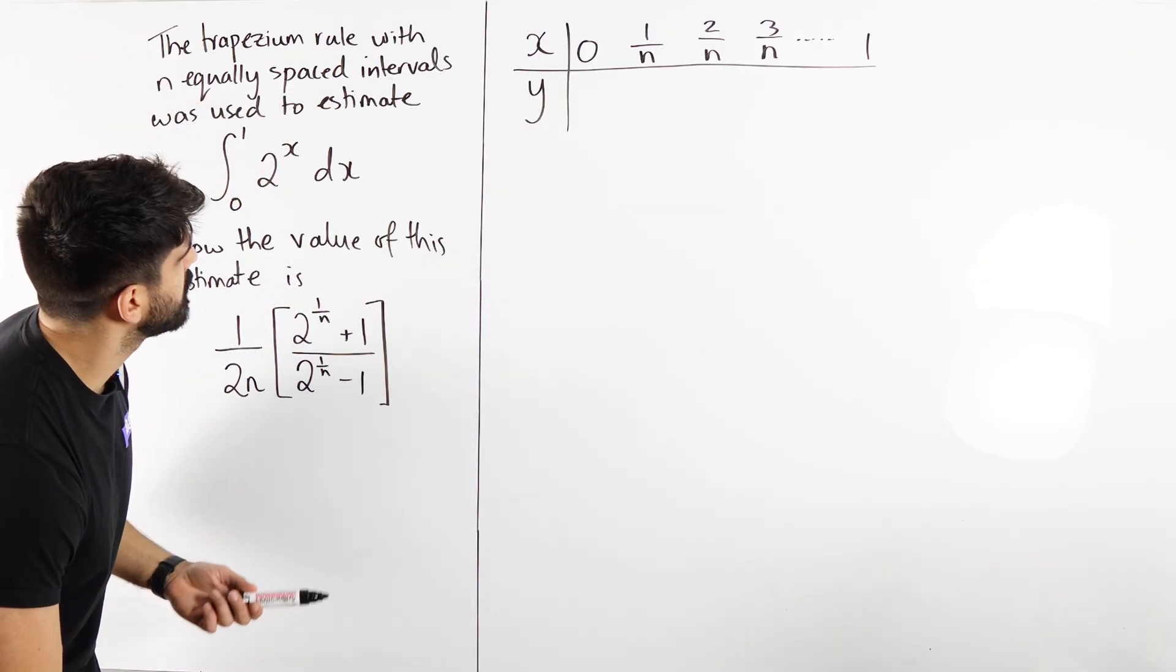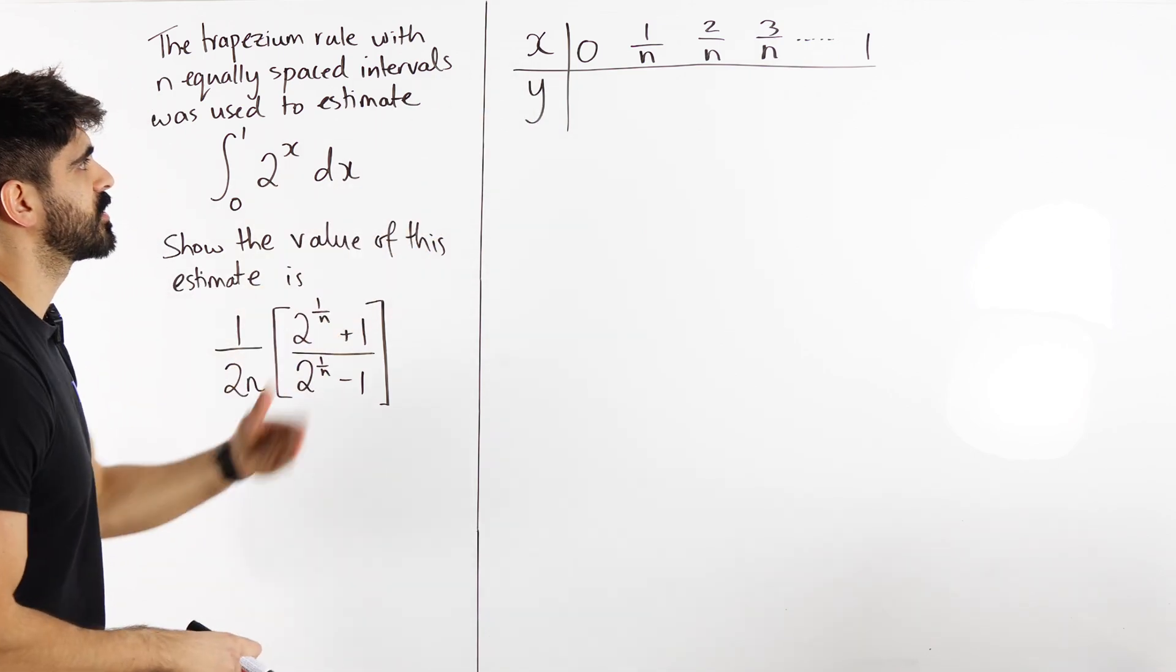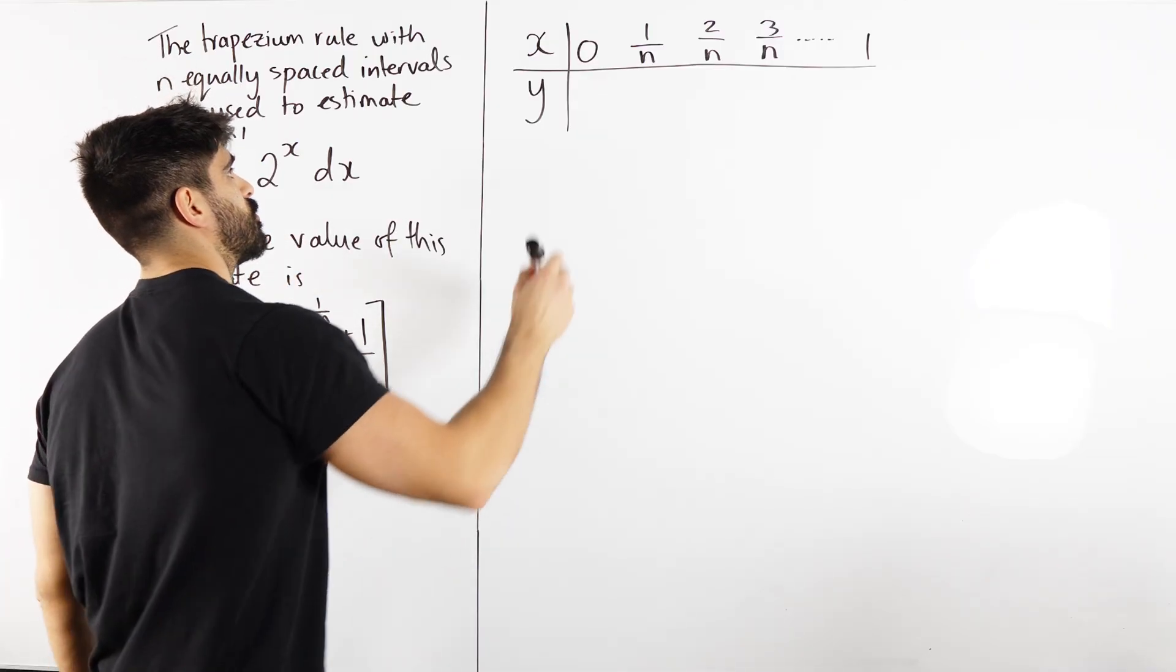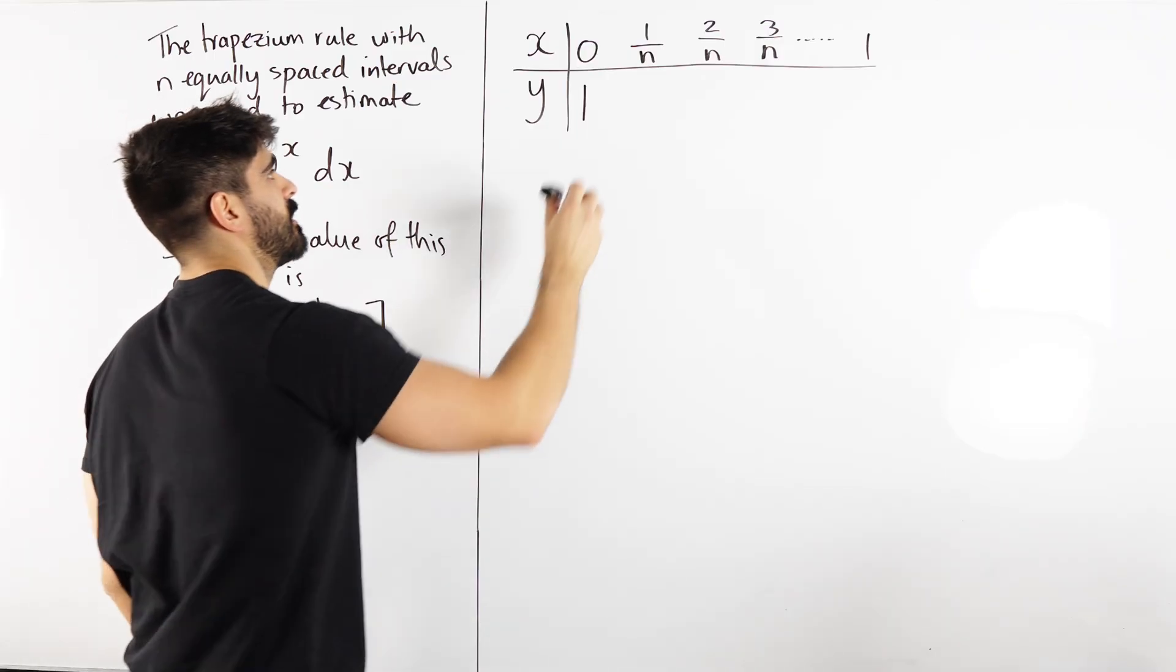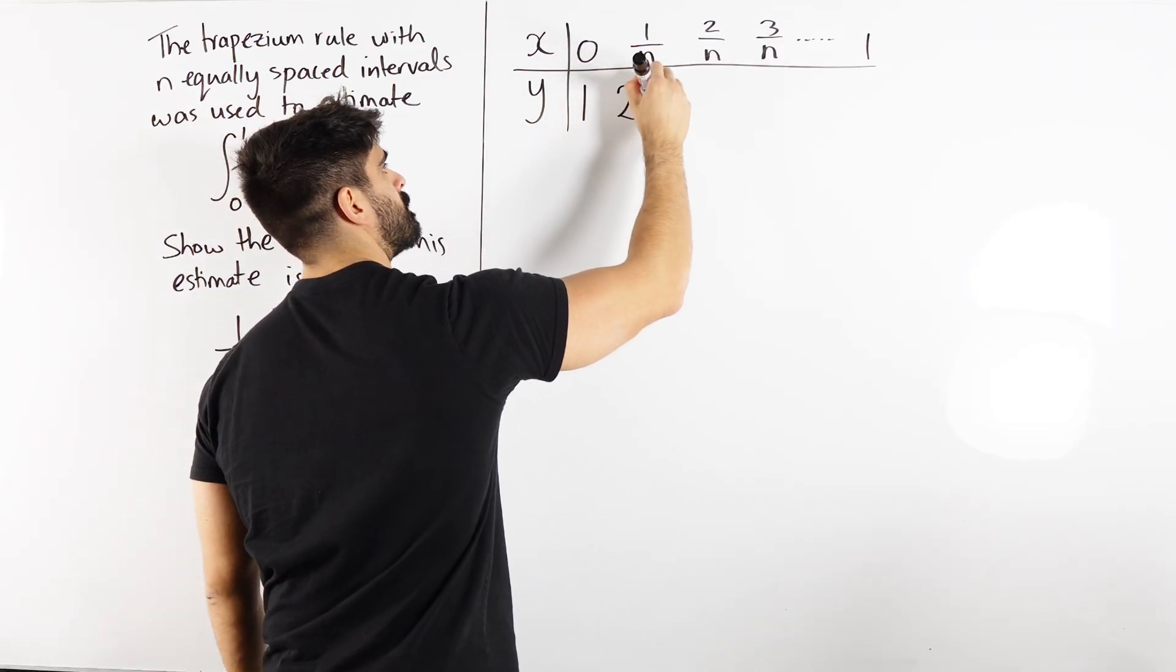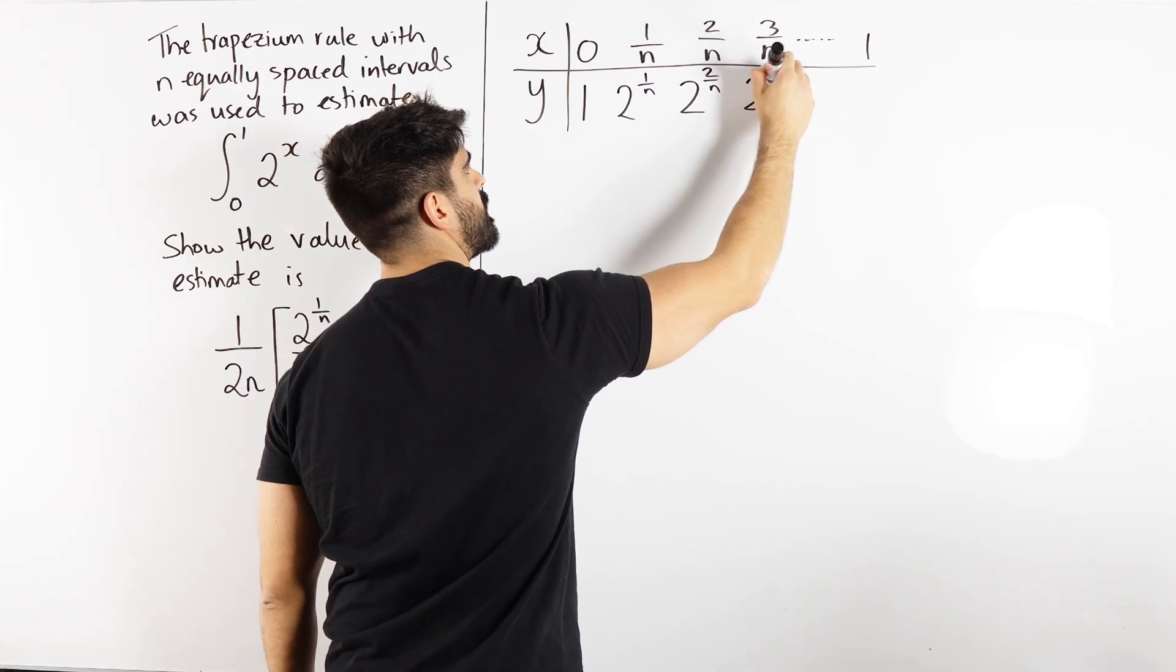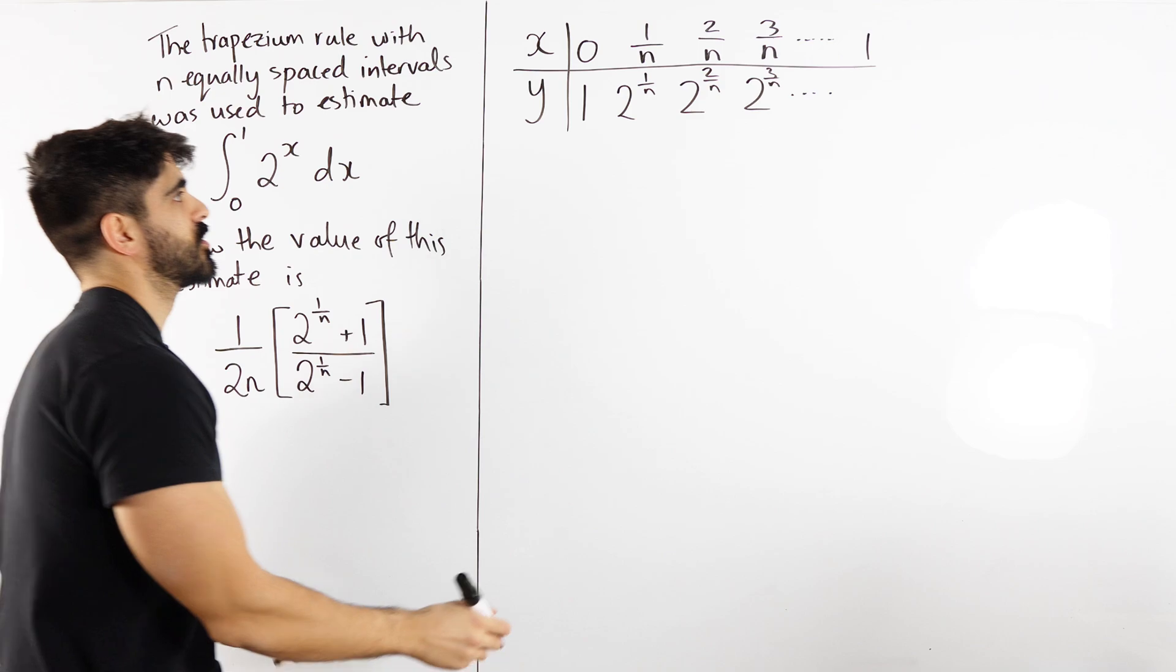So we then find the y values. We're going to take 0, substitute into our function to find the heights of the trapezium. So we have 2 to the power of 0 which is 1, then we're going to sub in 1 over n, 2 to the power of 1 over n, 2 to the power of 2 over n, 2 to the power of 3 over n, and then we're just going to get 2 to the power of 1 which is 2.